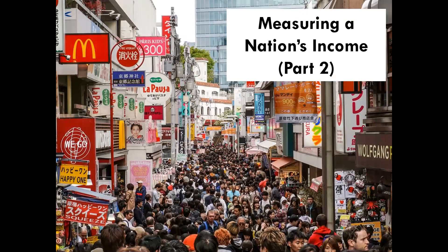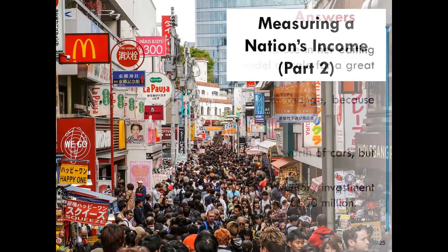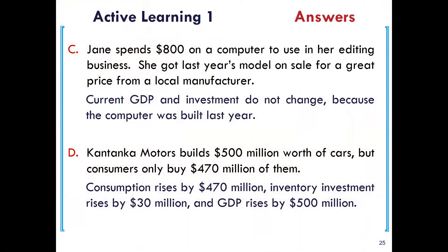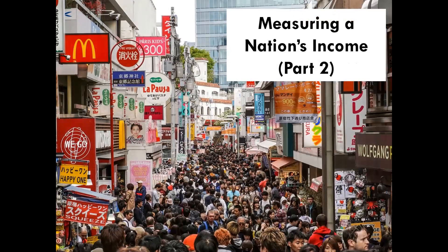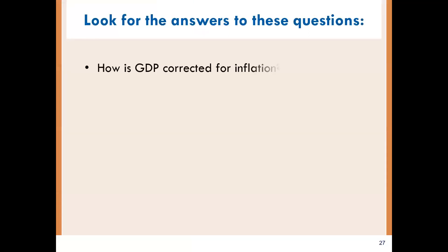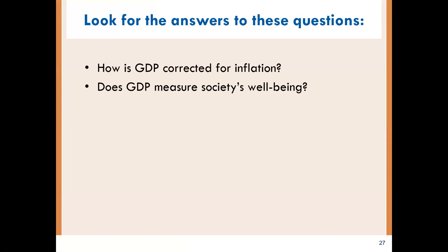We would like to end this part of the series on macroeconomics. We have attempted to look at some of the basic concepts used in the measurement of a nation's income. In part two, we'll continue by answering two fundamental questions: how is GDP corrected for inflation, and does GDP measure society's well-being? Thank you for watching this series — watch out for part two.